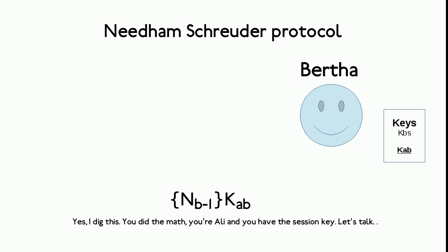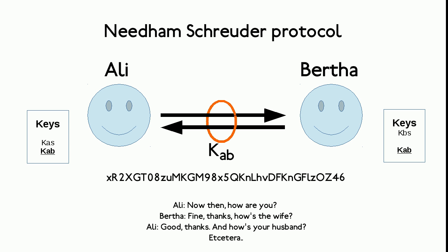Bertha and Ali have now established a secure channel. They can now interact in a secure way, without an eavesdropper understanding what they say to each other. In our example, the information exchange might as well have taken place in the clear, but in practice Ali and Bertha are processors on a computer, and the conversation they have contains confidential data.